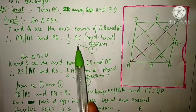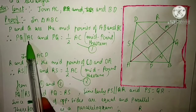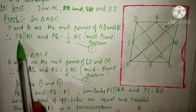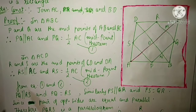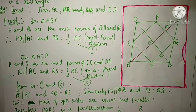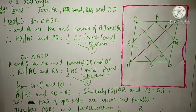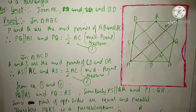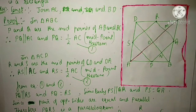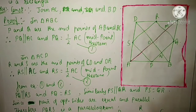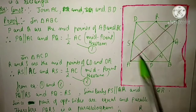From equation 1 and 2, AC appears in both. That means PQ and RS will also be parallel. So from equations 1 and 2, PQ is parallel to RS and PQ equals RS. Similarly, we can prove that PS is parallel to QR and PS equals QR. Since pairs of opposite sides are equal and parallel, therefore PQRS is a parallelogram.